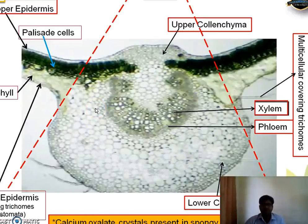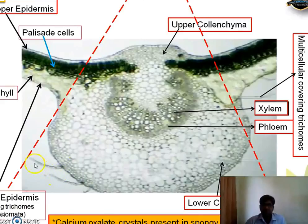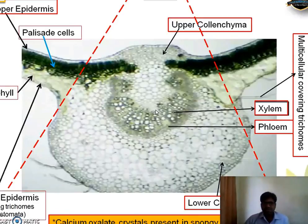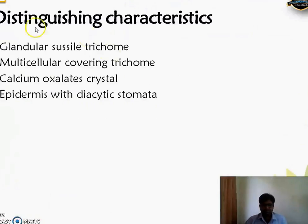What makes Vasaka distinguishable are its specific characteristics: the presence of trichomes — here you will see a three-celled multicellular covering trichome. Stomata are present but don't show in TS; it is a diacytic type of stomata, seen in surface preparation. The presence of calcium oxalate crystals in the spongy parenchyma is also a distinguishing characteristic. To summarize: the distinguishing characteristics of Vasaka are two types of trichomes — glandular capitate trichome and multicellular covering trichome.